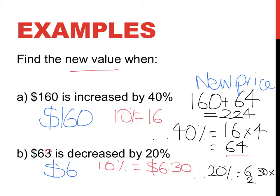6 times 2 is 12, 30 cents times 2 is 60 cents. So 20%, sorry, I'm just going to go down here, is going to be $12.60. My new value,